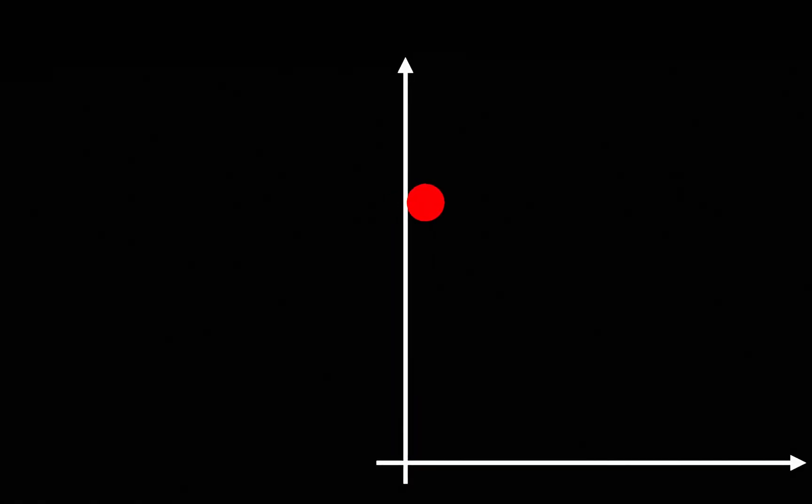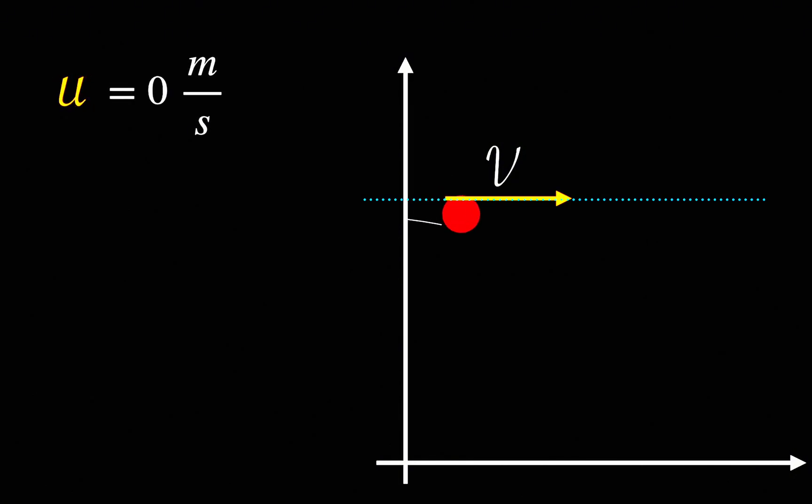The man leaps horizontally with an initial velocity v. This means his initial vertical velocity is zero. As he falls, his vertical displacement becomes minus h. So, we can write s equals minus h.